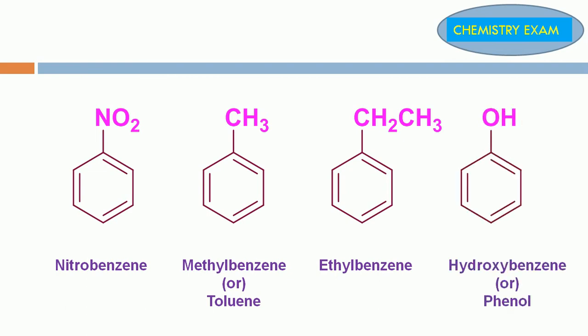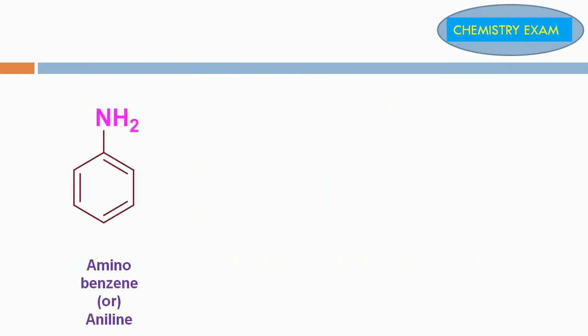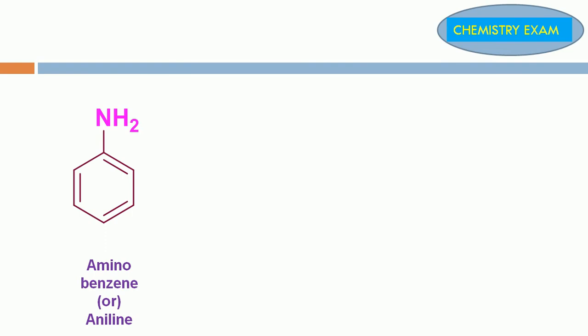OH group substituted in benzene is called hydroxybenzene or phenol. NH2 substituted in benzene ring is called aminobenzene or aniline. SO3H substituted benzene is called benzene sulfonic acid.